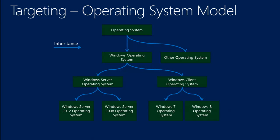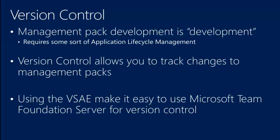Here's the operating system model hierarchy in Operations Manager. If you target a node on this chart, it also targets anything below that node. If you target Windows Operating System, the monitor goes to all Windows operating systems including 2012 and 2008. If you target Windows Server Operating System, it only goes to servers, not clients. Targeting is super important — you've got to know what you want to target.